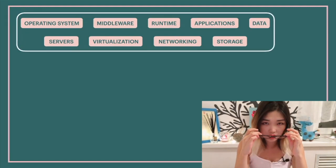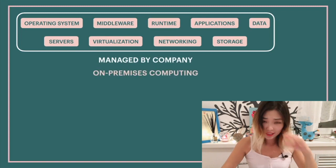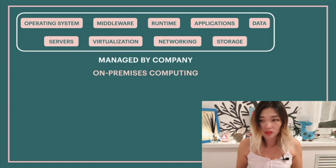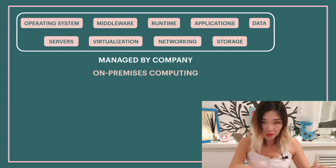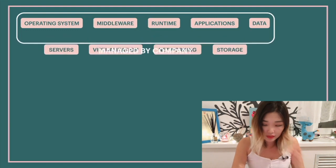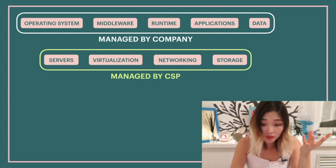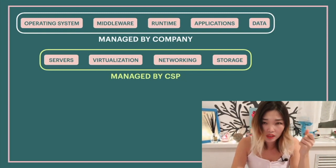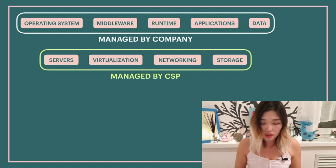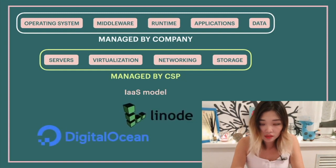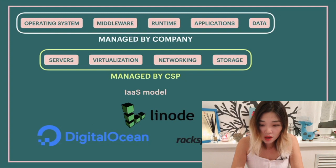When all these components are managed by the company itself, it is considered on-premises computing. Different models of cloud computing offer to manage all or parts of these components. For example, in the infrastructure as a service model, the company manages the operating system, middleware, runtime, applications, and data, while the cloud service provider takes care of the servers, virtualization, networking, and storage. Examples of IaaS providers include Amazon Web Services, DigitalOcean, Rackspace, or Linode.